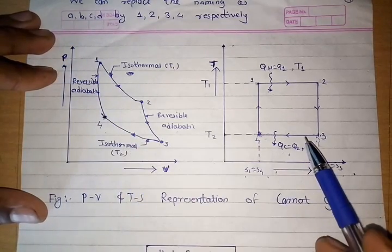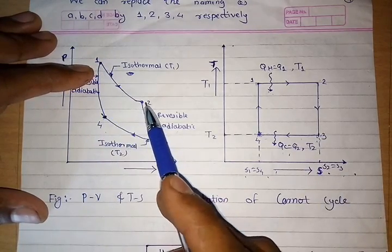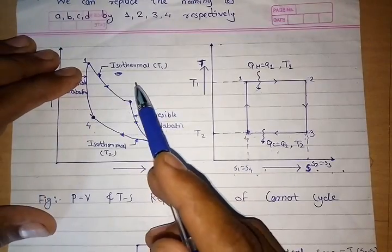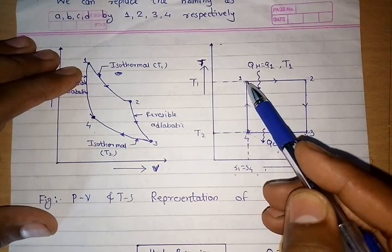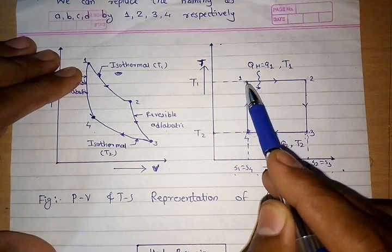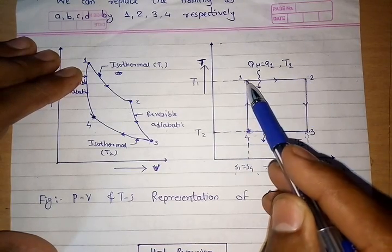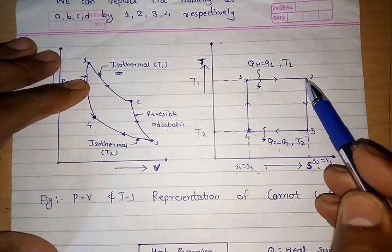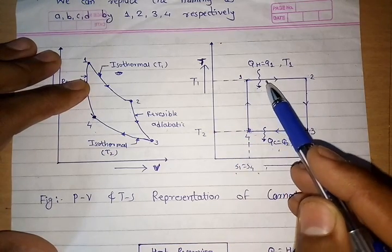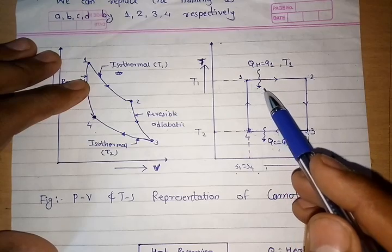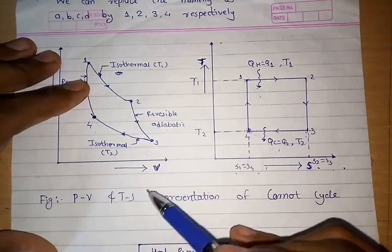Using this PV diagram, we can plot the TS diagram. For the first process from point 1 to 2, it is an isothermal process carried out at constant temperature. Take point 1 at that location and draw a horizontal line from left to right up to point 2. During this process, QH amount of heat is added to the system and the gas starts expanding.